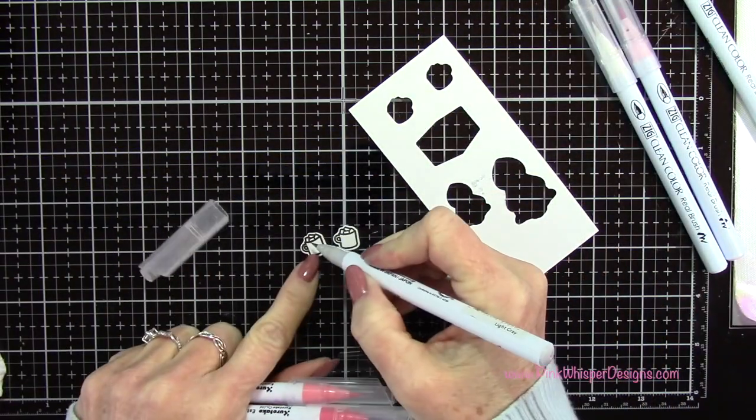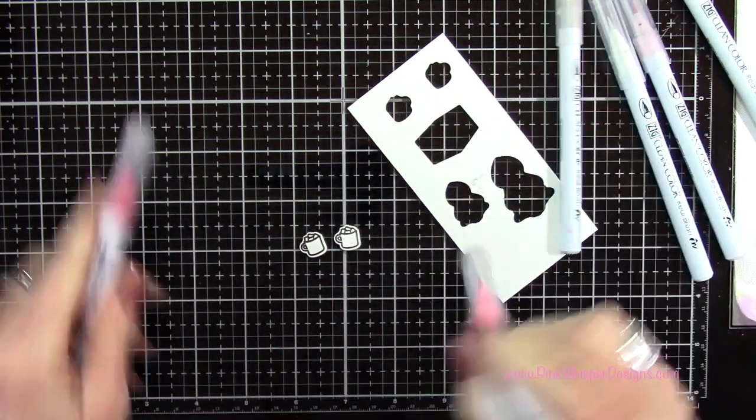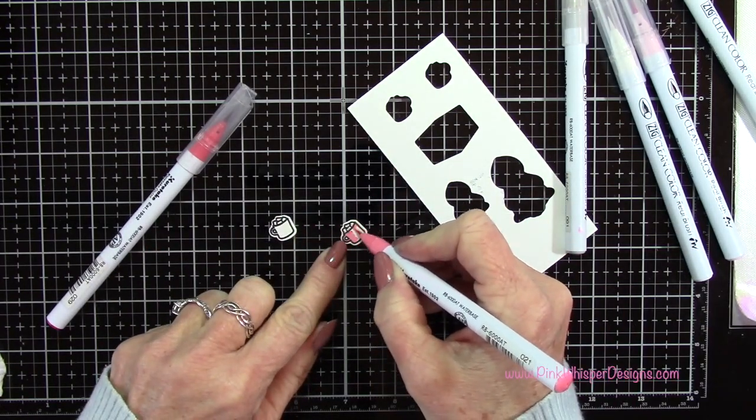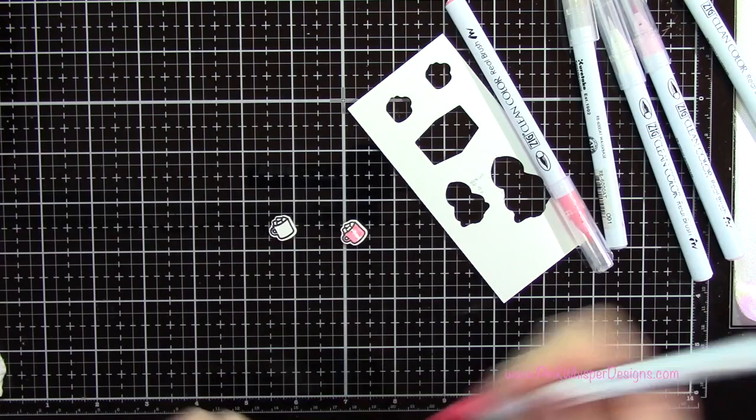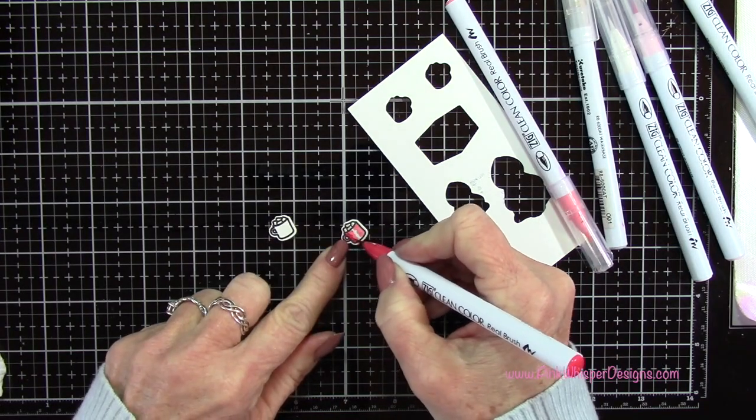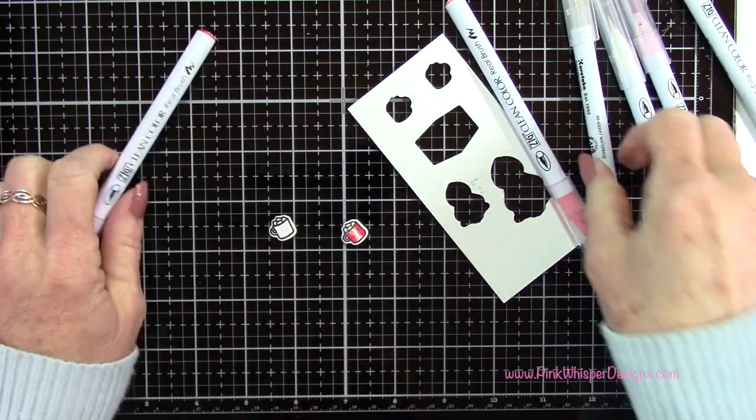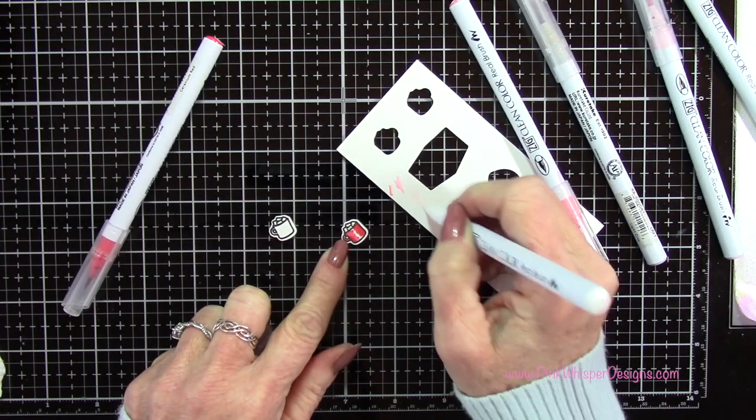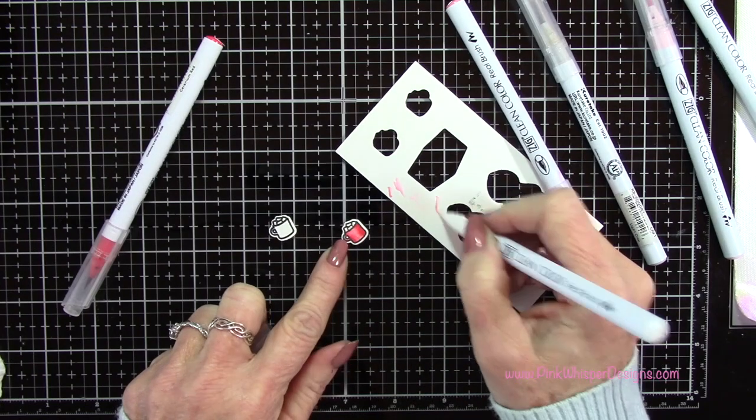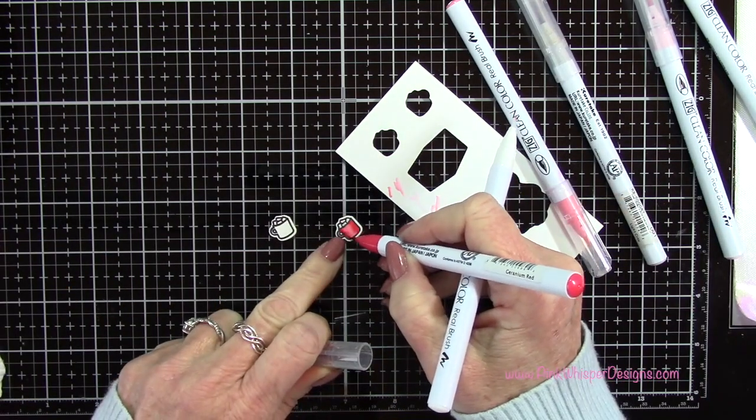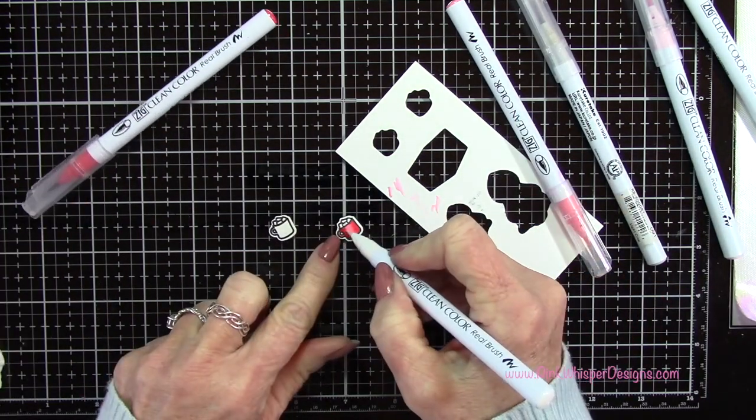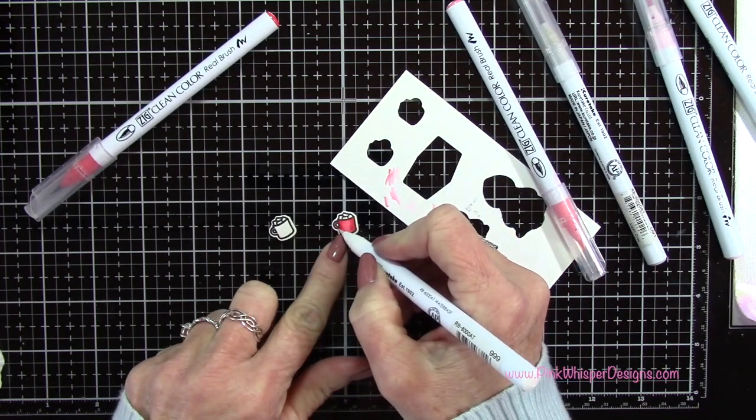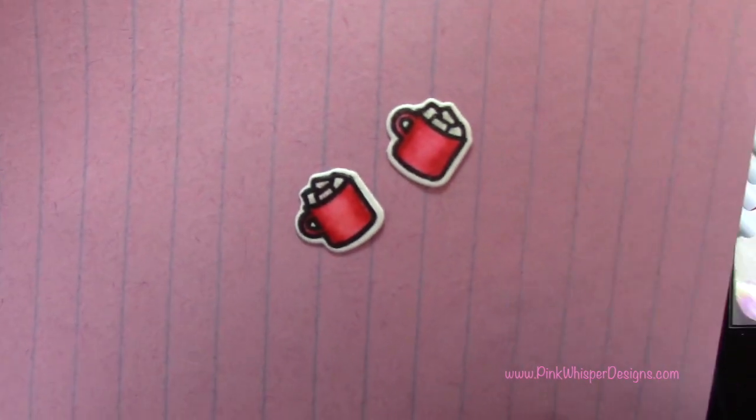You can see that up close. Now with light gray I'm just going to give a little touch of gray around those marshmallows. Then I'm going back to those same two pink and red colors again to do the little hot chocolate mugs, keeping the center the lightest. I did both of those the same way.